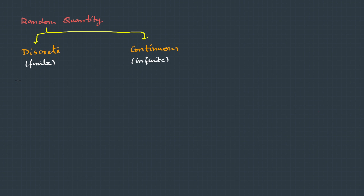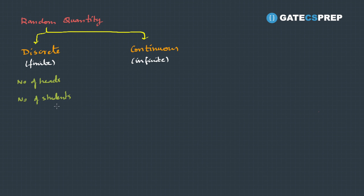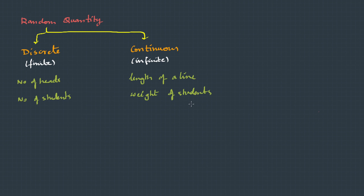For example, like the number of heads in a toss, or maybe we are counting the number of students in a class. Though we don't know the exact data, we are sure that the number will always be either 1, 2, 10 — we have definite values and they are integers. But when it comes to continuous data, it could be like the length of a line: 1 cm, 1.1, 1.2, 1.5 — it could be infinite. Similarly, when measuring the weights of students in a class, again this is continuous. It could be 68.1 or 68.5 — it could be anything. It could be decimal, and basically these are real numbers. So we will be studying random quantities in two classifications: one is discrete, the other one is continuous.